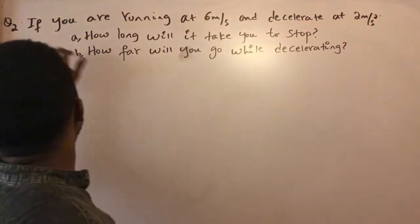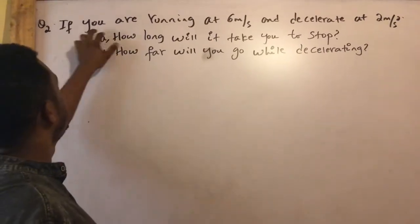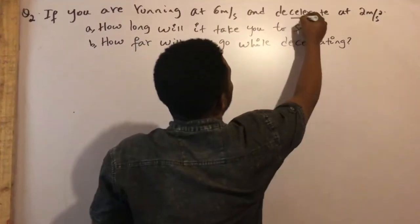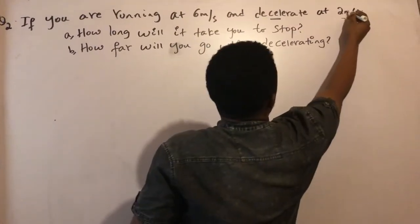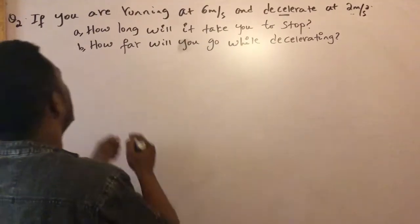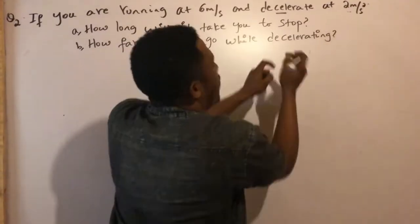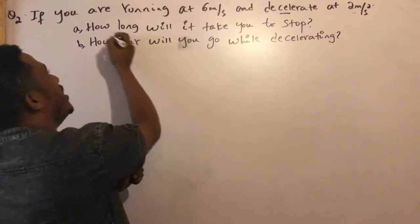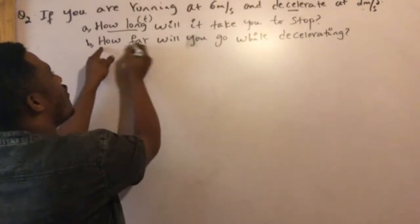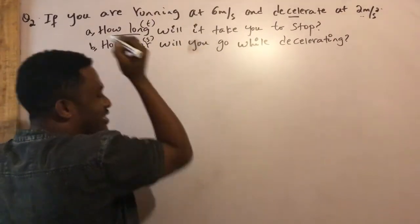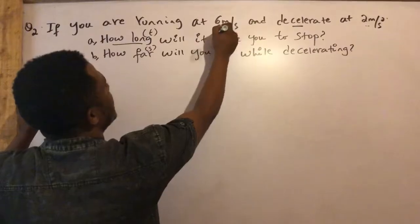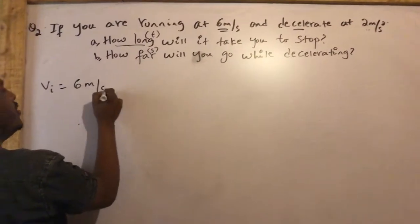The second problem says that if you are running at 6 meters per second, or V initial is 16 meters per second, and you stop — the final speed is zero. How long will it take you to stop? We need to find time. How far will you travel? We need distance.